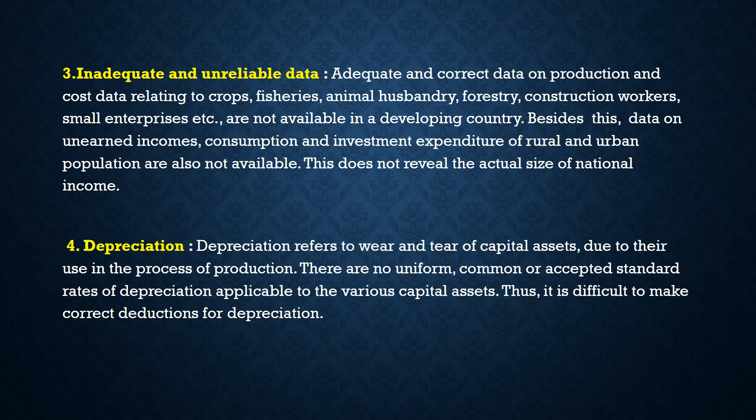Number 3: inadequate and unreliable data. In India, or in a developing country, data is not properly kept. We do not have adequate and correct data on production and cost related to crops, fisheries, animal husbandry, forestry, construction workers, small enterprises, etc. Besides these, data on unearned income, consumption and investment expenditure of rural and urban area populations are also not available. This does not reveal the actual size of national income.